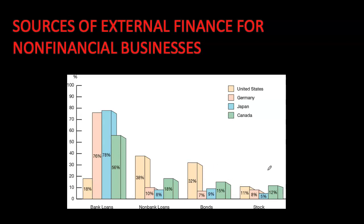In fact, indirect finance — involving banks and non-bank loans — is many times more important than direct finance. Remember, direct finance was when we were raising funds directly through securities markets. Financial intermediaries, particularly banks, are actually the most important source of external funds. Mishkin also points out that the financial sector is the most heavily regulated sector of the economy, and it's only very large and well-established corporations that have easy access to securities markets.